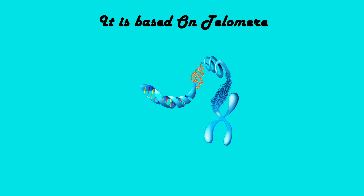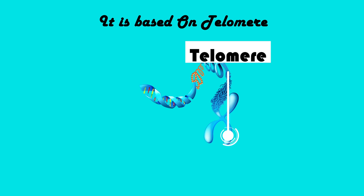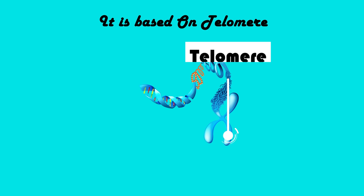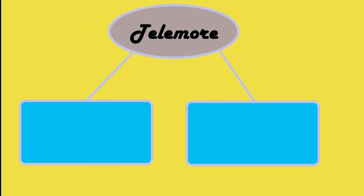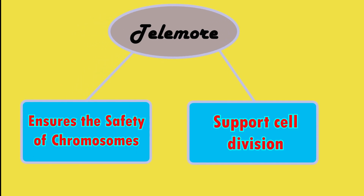This genetic theory of aging is based on the telomere. Now, telomere is a part of the DNA. This is the terminal part of the chromosome. And it is considered non-coding, junk material.